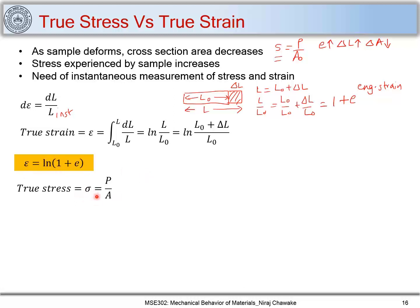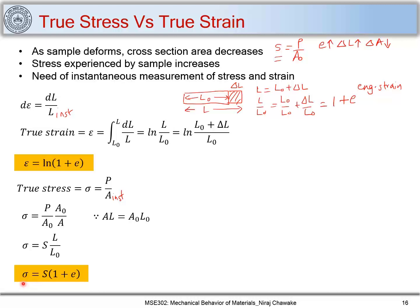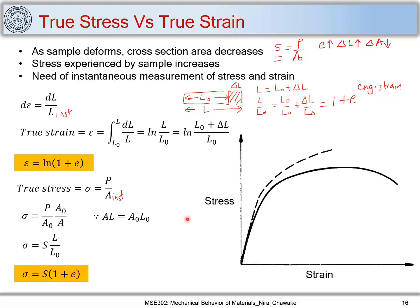True stress σ is defined as P/A, where A is the instantaneous area. Multiplying and dividing by the initial cross-sectional area A₀ and applying constancy of volume, P/A₀ is engineering stress S, and l/l₀ = (1 + e). So we get true stress σ = S(1 + e). Plotting this together with stress on the y-axis and strain on the x-axis, the solid curve shows the engineering stress-strain curve.